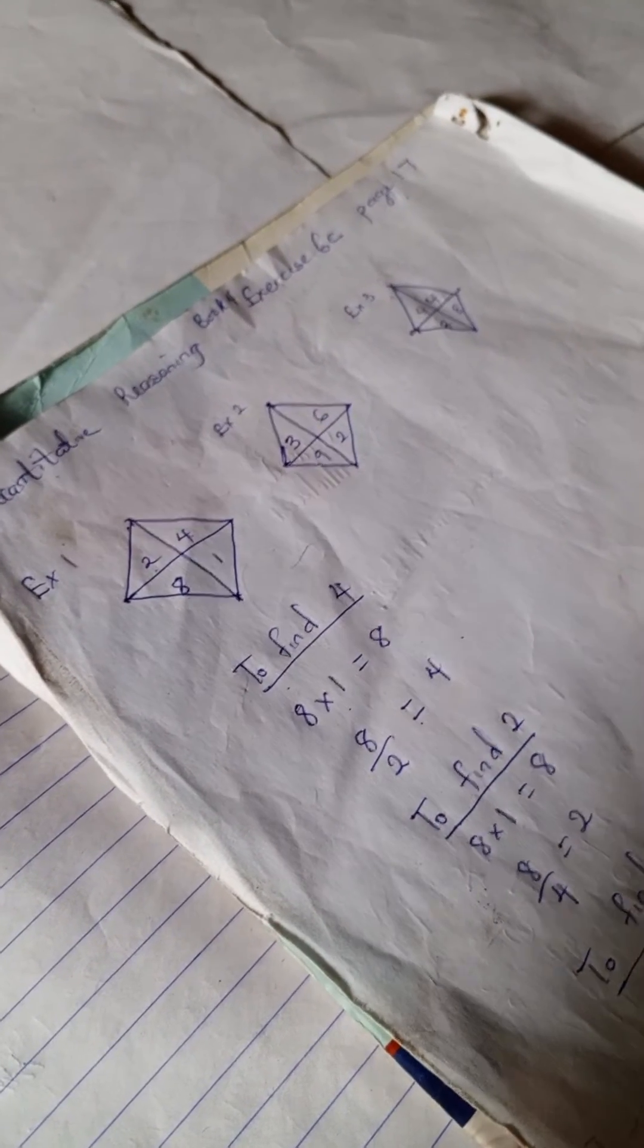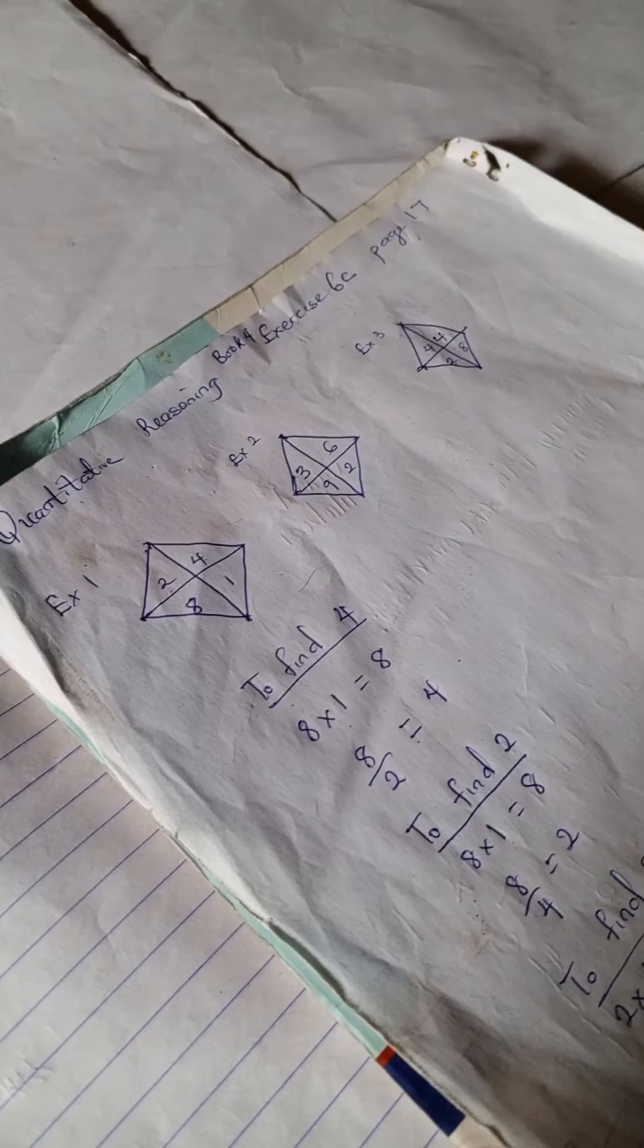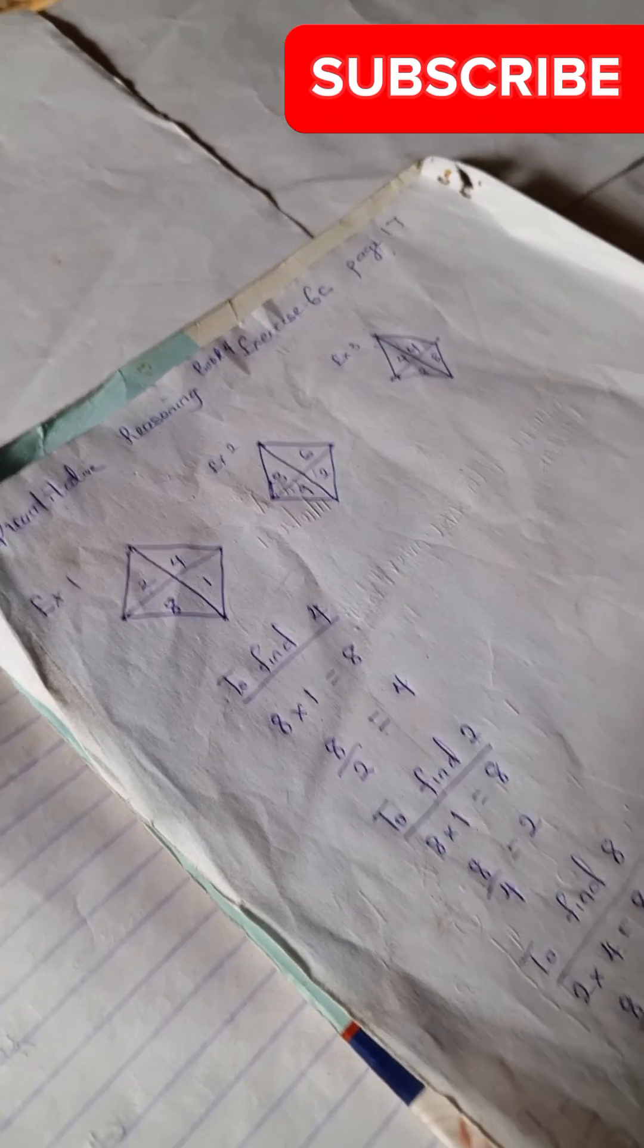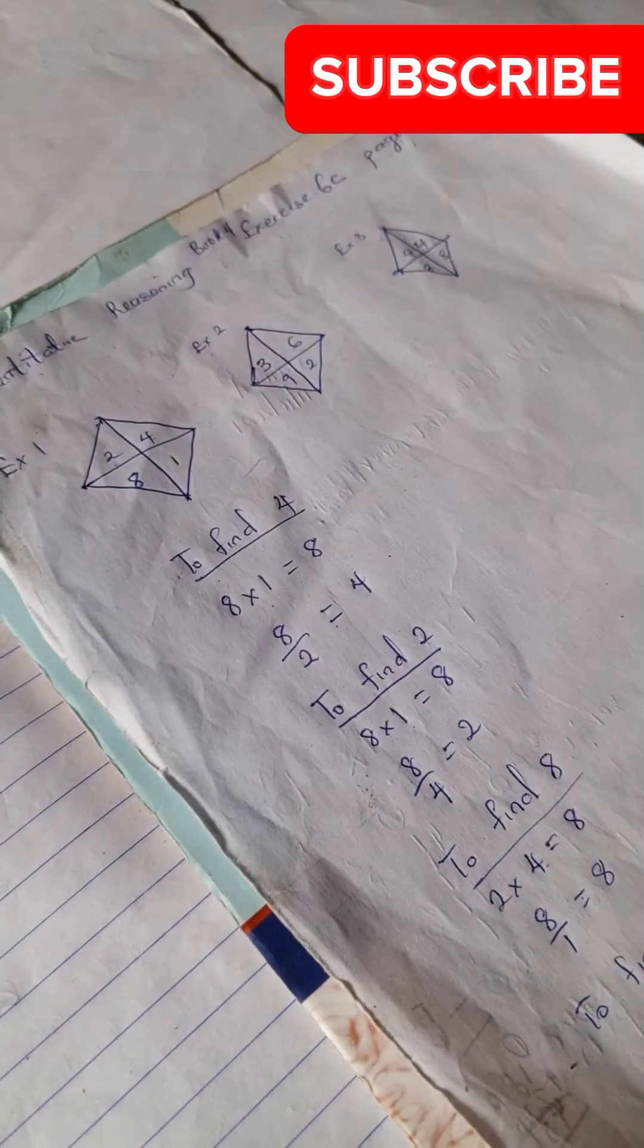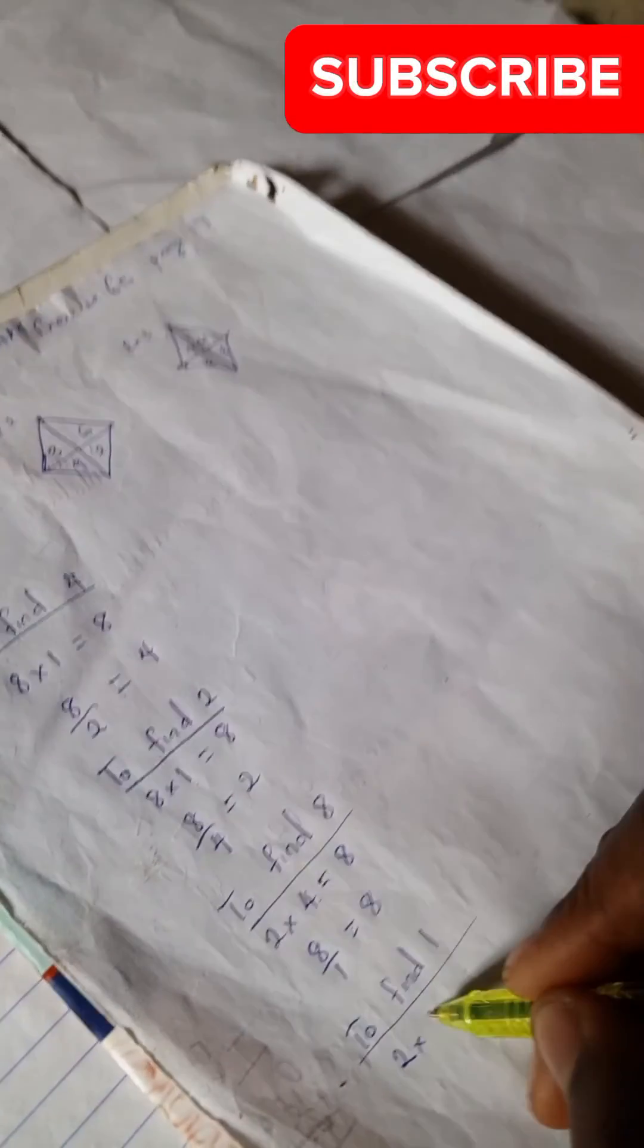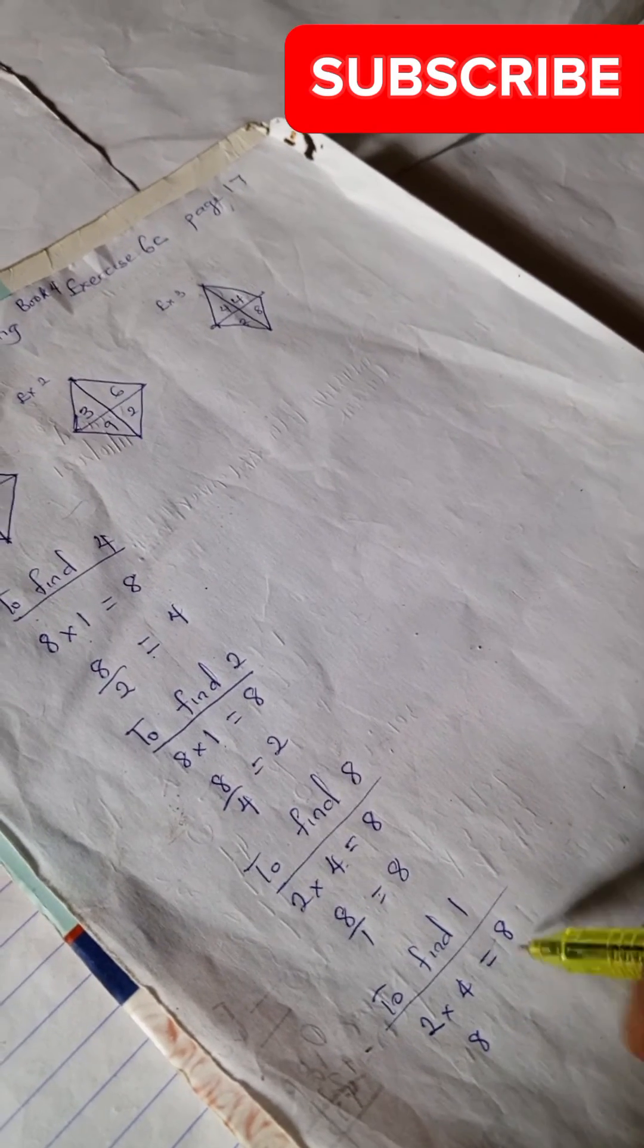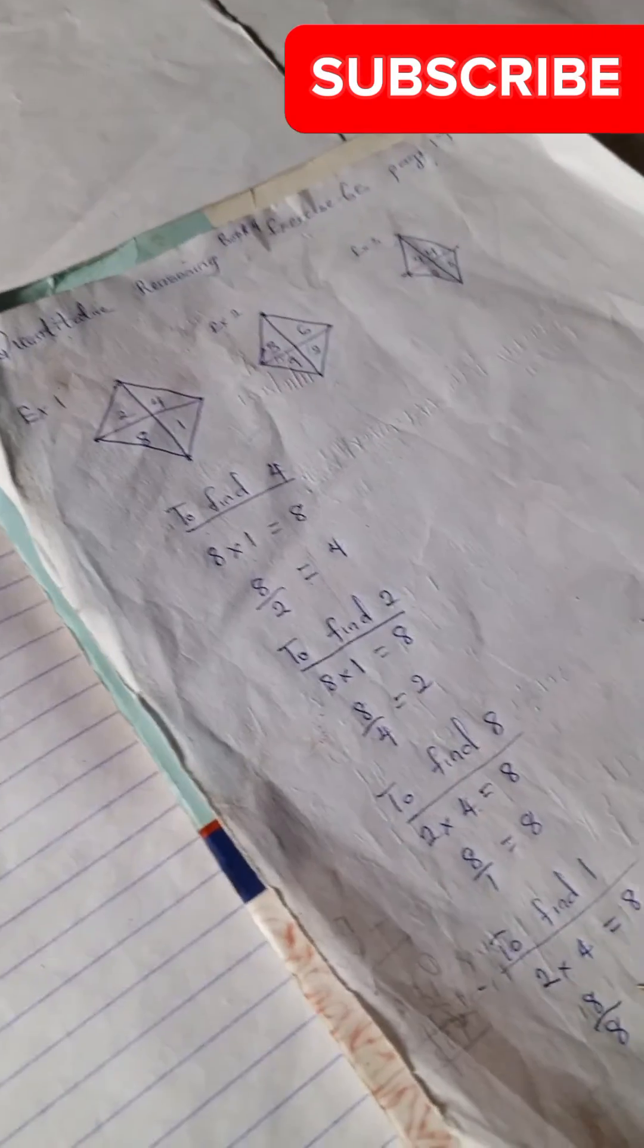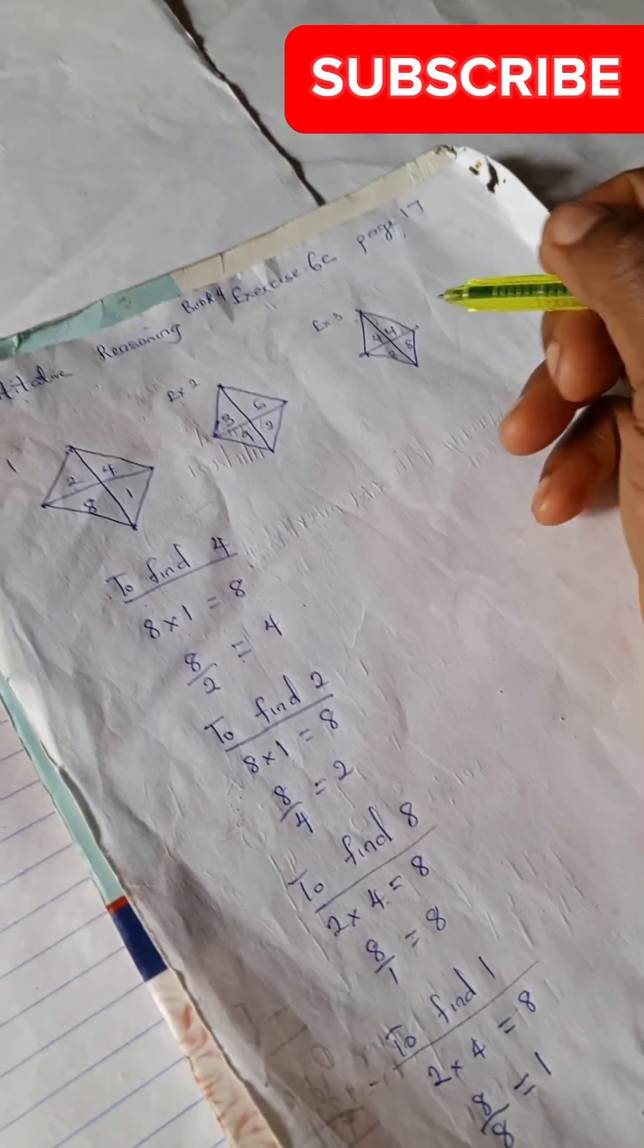is 2. And to find 1, we have 2 times 4 is 8, and 8 divided by 8, which is already available, is 1. Now if we also do it here, we're going to get the same thing, so you can